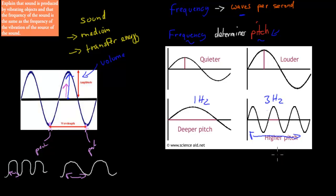Whereas high pitch means high frequency and low wavelength. The dot point says: explain that sound is produced by vibrating objects, and that the frequency of the sound produced is the same as the frequency of the vibration of the source of the sound.